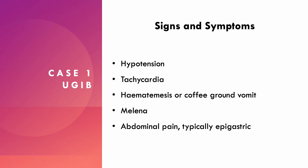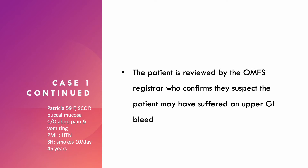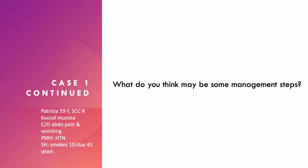Signs and symptoms to look out for: the patient may be hypotensive and tachycardic. They may have haematemesis — vomiting blood — or coffee ground vomit, which is partly digested blood. They may have melaena, which is partly digested blood from the stool. They may also have abdominal pain, typically in the epigastrium. The maxfax registrar confirms the suspected upper GI bleed and contacts the medical registrar who suggests management steps and reviews the patient urgently.